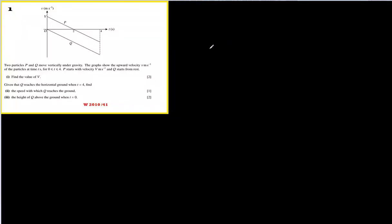This is question number one of winter 2010 paper 41 mechanics. They have given a VT graph which shows two particles P and Q, and they move vertically under gravity. Let's try to understand what this means.